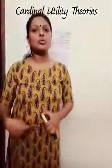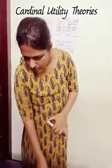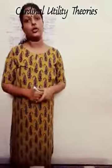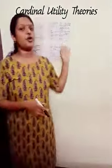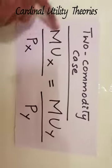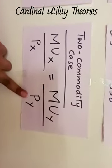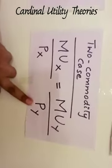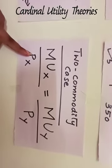Now we have to look at the two commodity case. In the two commodity case, the assumption is that the consumer consumes only two goods. Coming to the formula — the equilibrium condition for the two commodity case is MU of X divided by P of X equals MU of Y divided by P of Y. Simply, the consumer arrives at equilibrium in the two commodity case where the ratio of marginal utility to the price of each commodity is equal for both commodities.